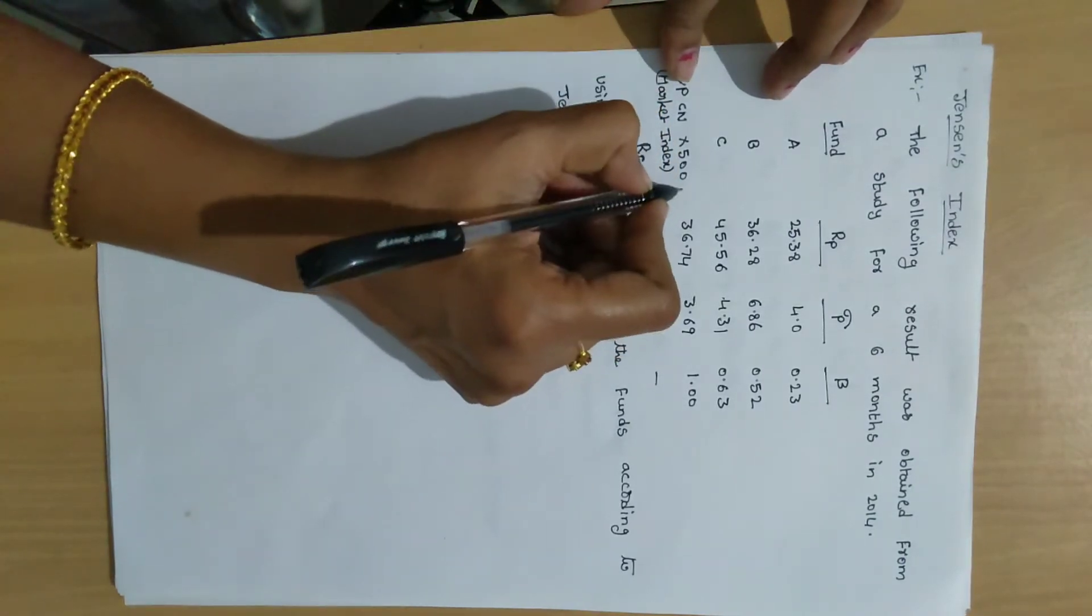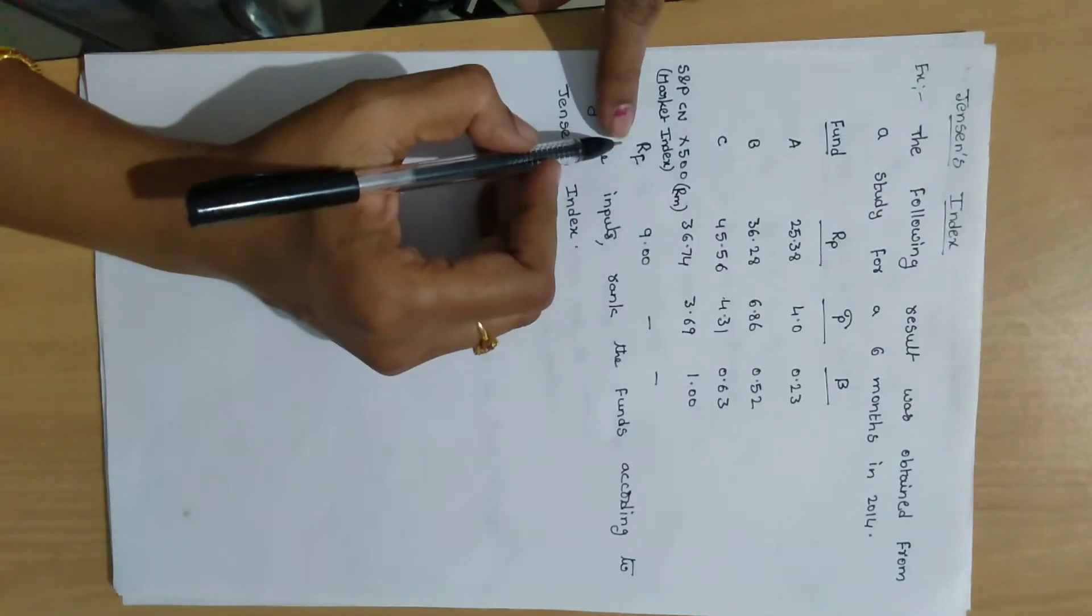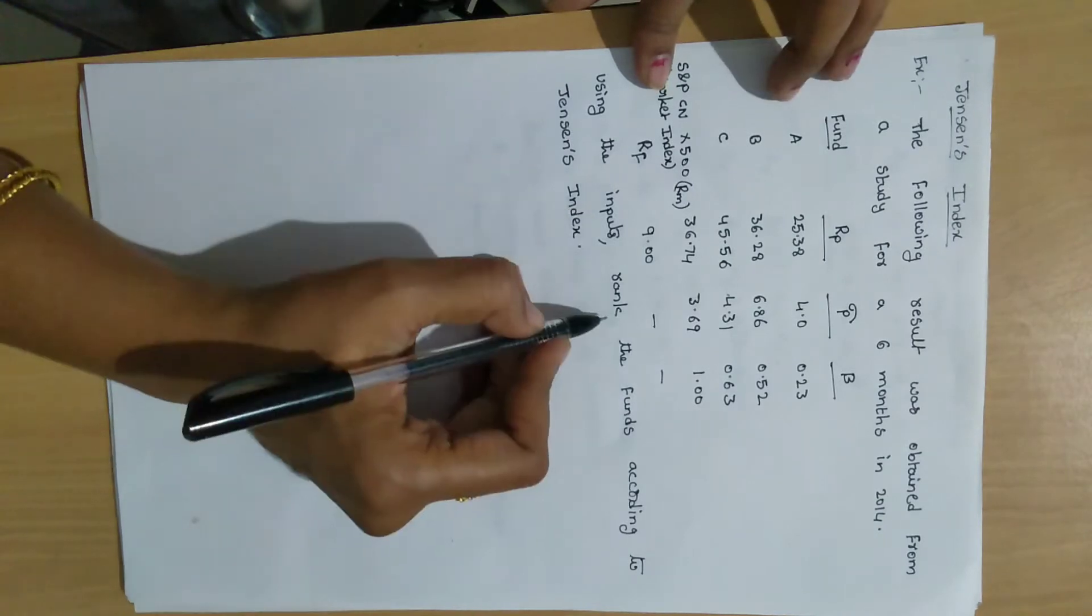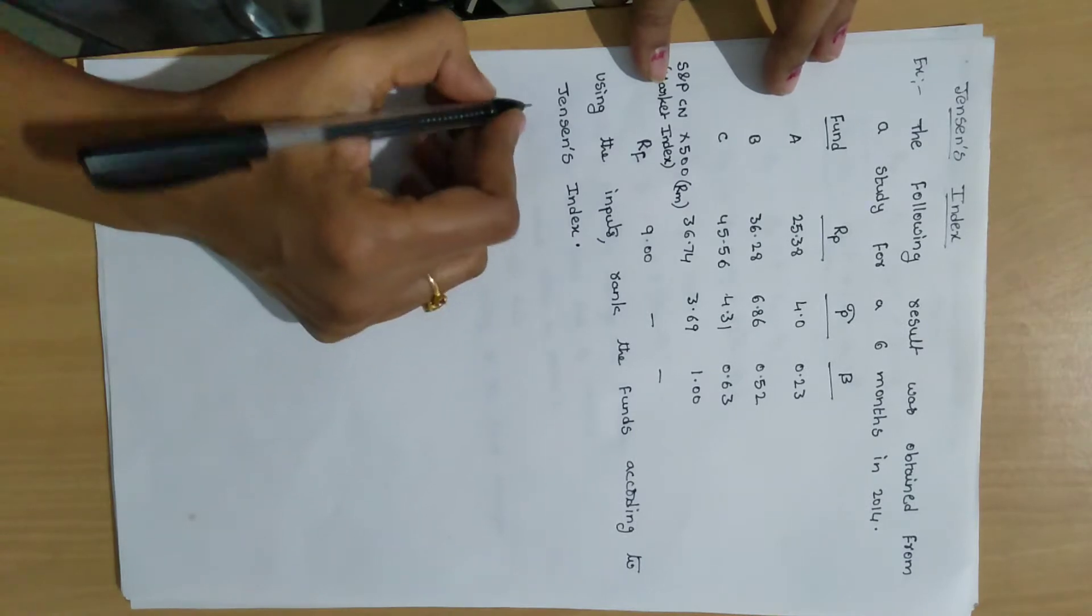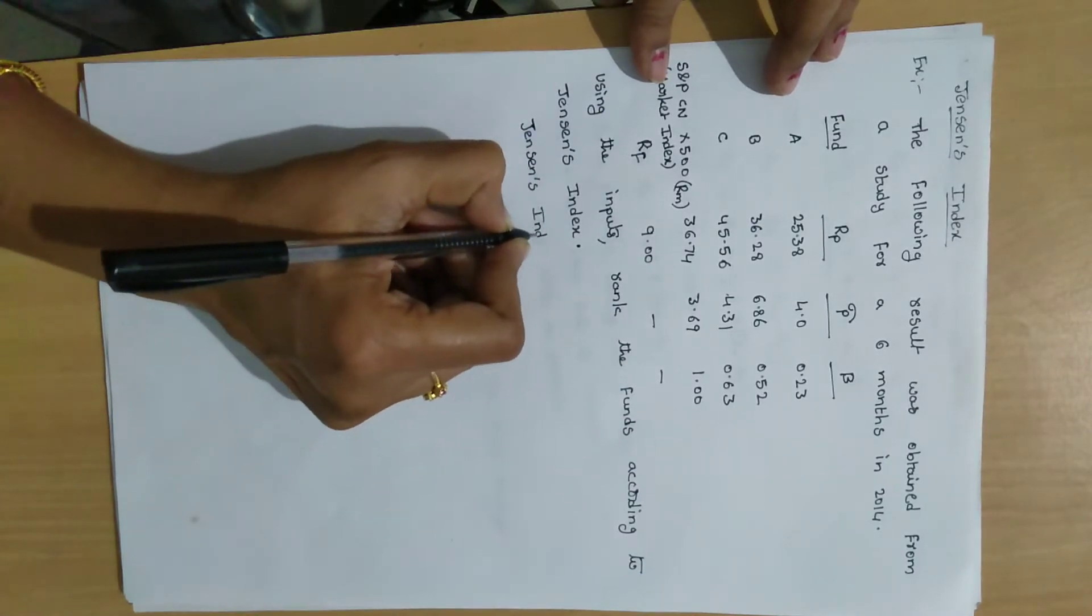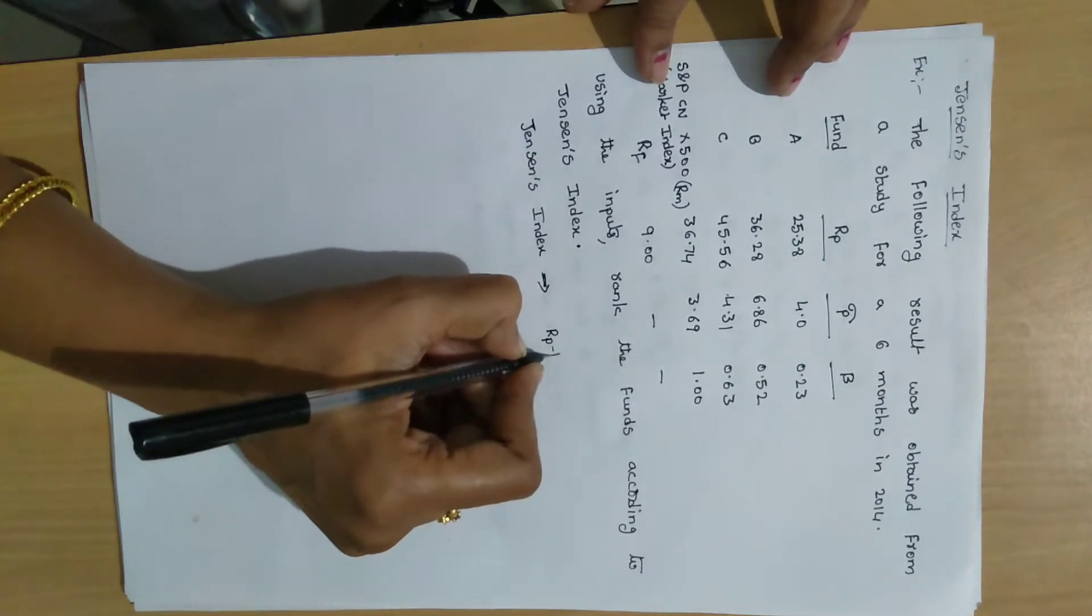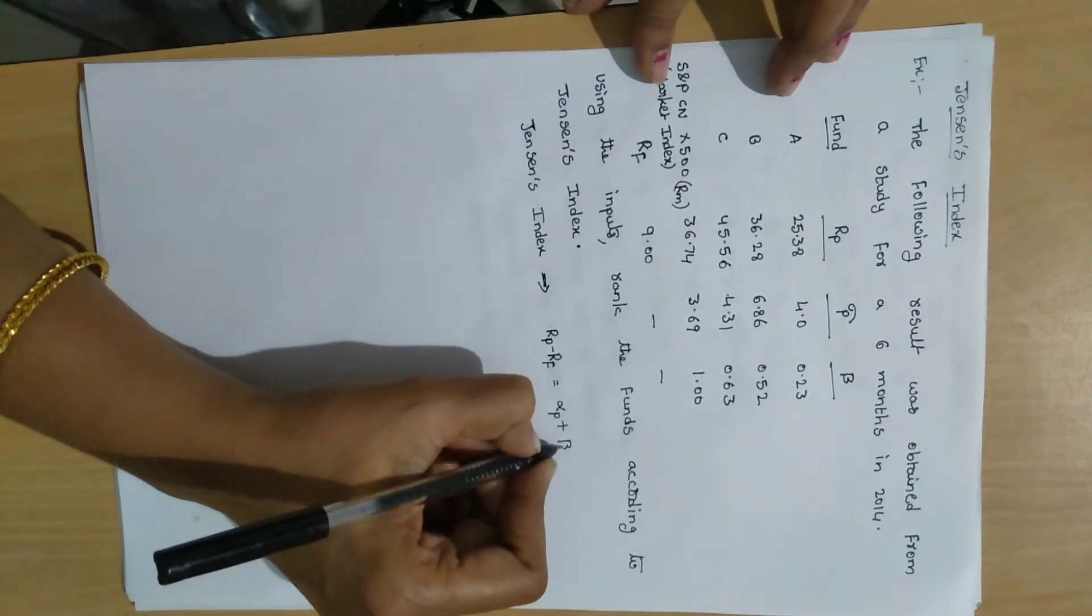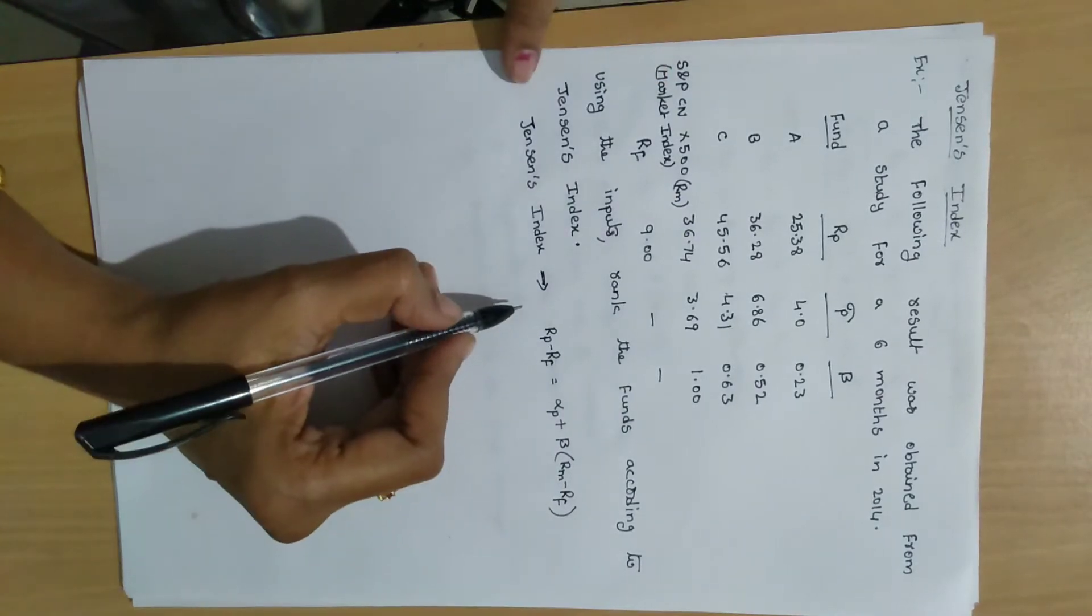So this is RM value, return on market portfolio. And RF - RF means risk-free rate of interest, 9 points. Using the inputs, ranking the funds according to Jensen's index. What is the Jensen's index equation?